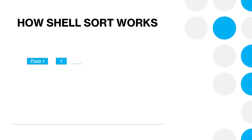For example, we have some data which needs to be sorted. What we do at the start is establish a gap value. This gap value can be determined, for example, by taking the number of elements and dividing that by 2. So here we have 6 elements — divide that by 2, you get 3, and you can use that as the gap.